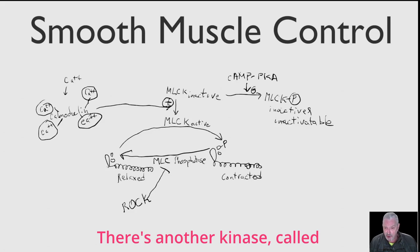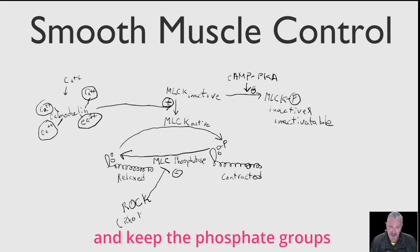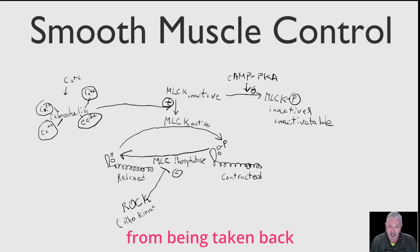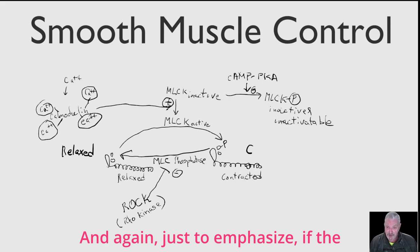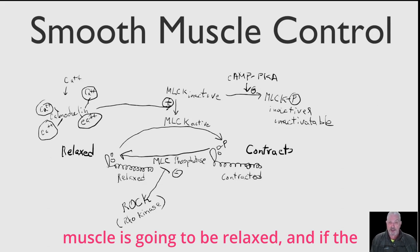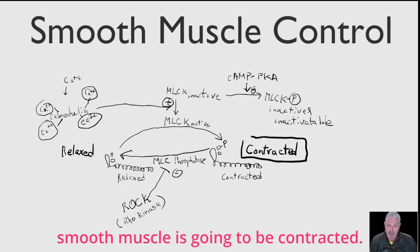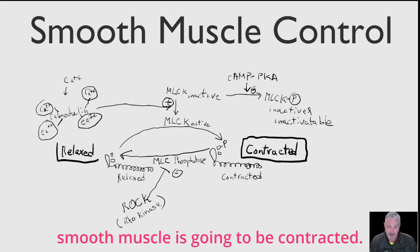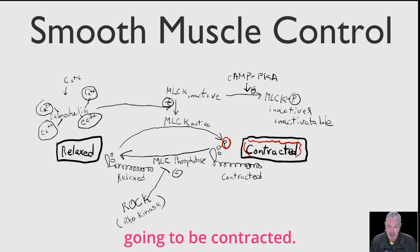There's another kinase called Rho kinase, or ROC, which can inhibit myosin light chain phosphatase and keep the phosphate groups from being taken back off of the myosin light chains. To emphasize: if the light chains aren't phosphorylated, the smooth muscle is going to be relaxed. If the myosin light chains are phosphorylated, the smooth muscle is going to be contracted. It's all about whether the light chains have a phosphate group on them — if they do, they're going to be contracted.